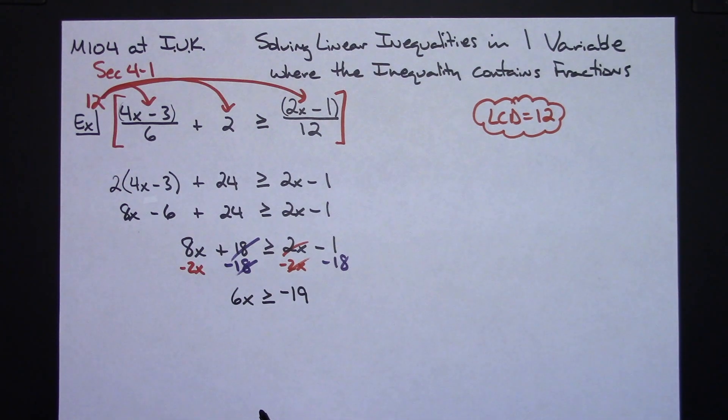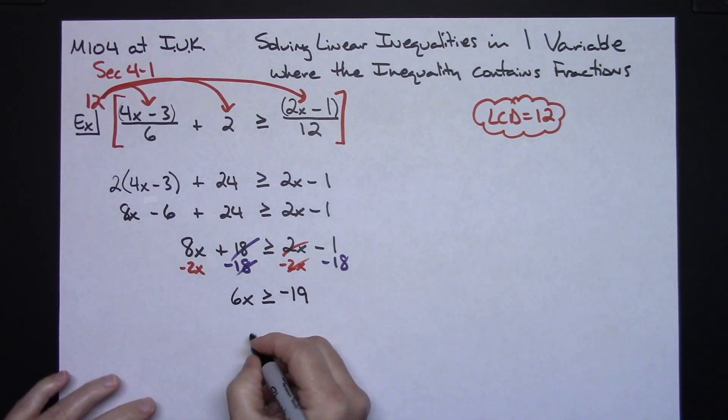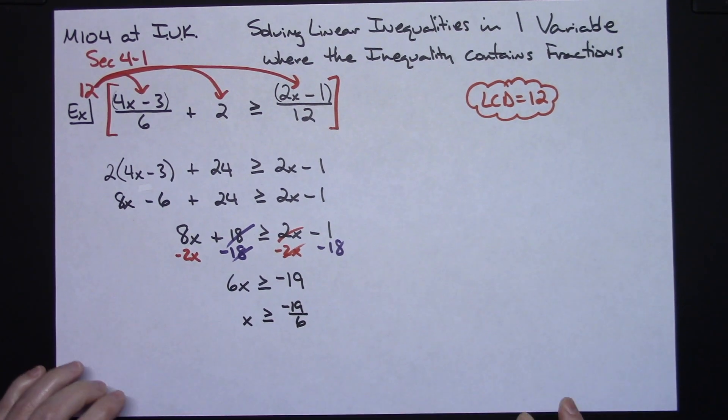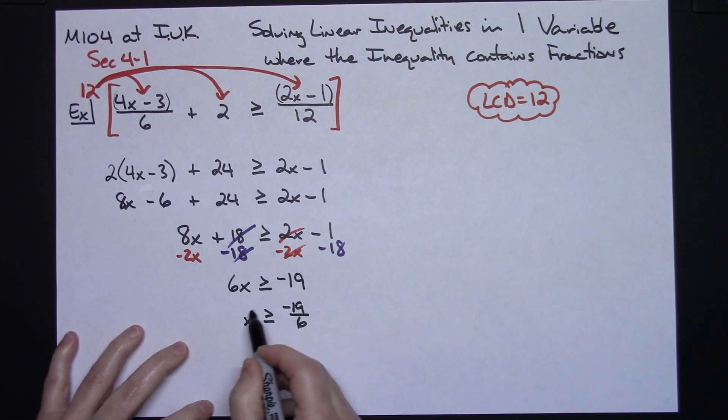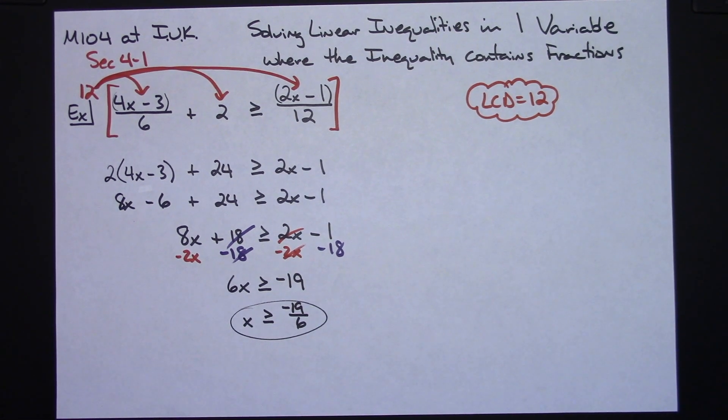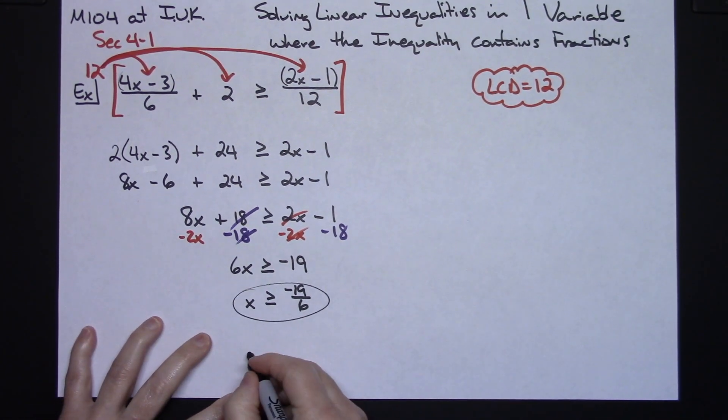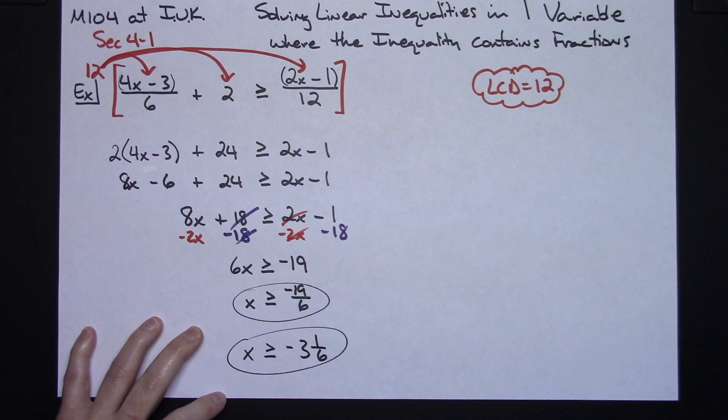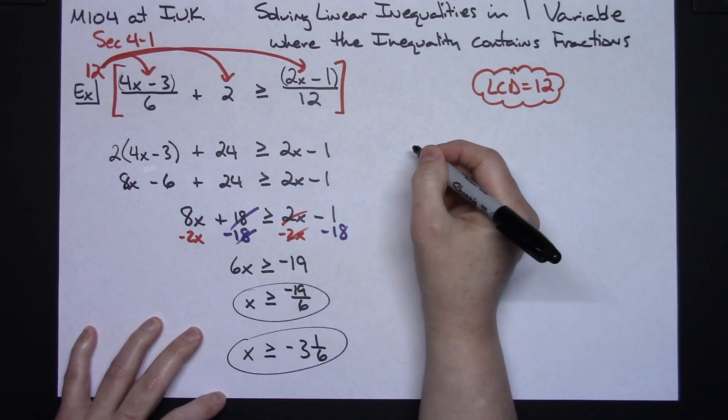So divide both sides by that 6 there. x is greater than or equal to negative 19 over 6. Now that technically is a correct answer. If you are planning on putting this on a number line and estimating it, it really probably would help to go ahead and put that into a mixed number. So x is greater than or equal to negative 3 and 1/6. That just might be easier when you go to place it on your number line.